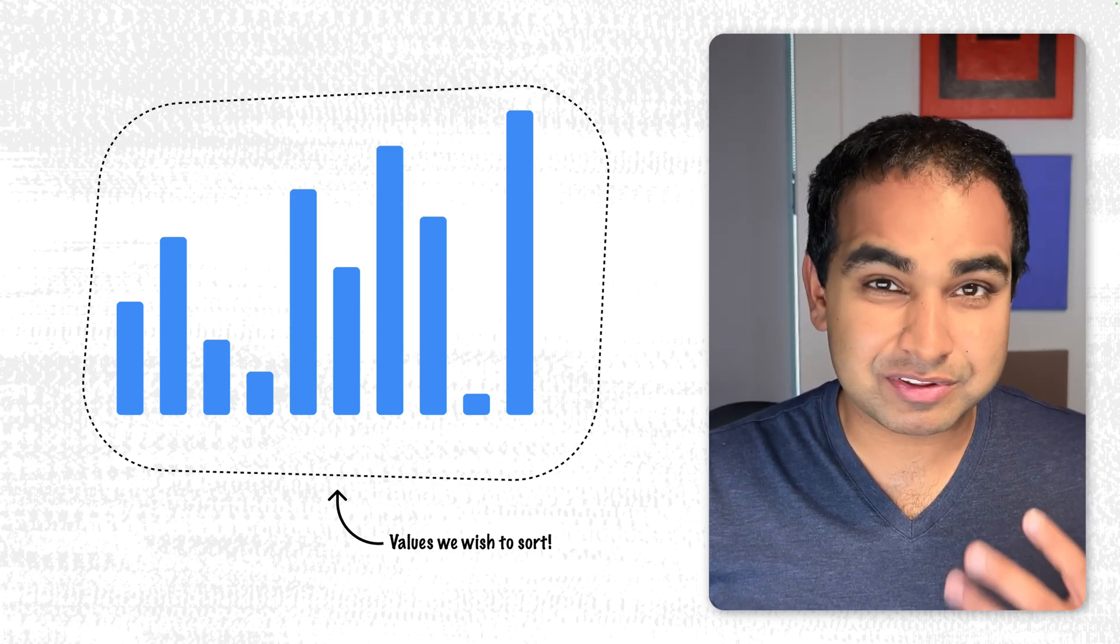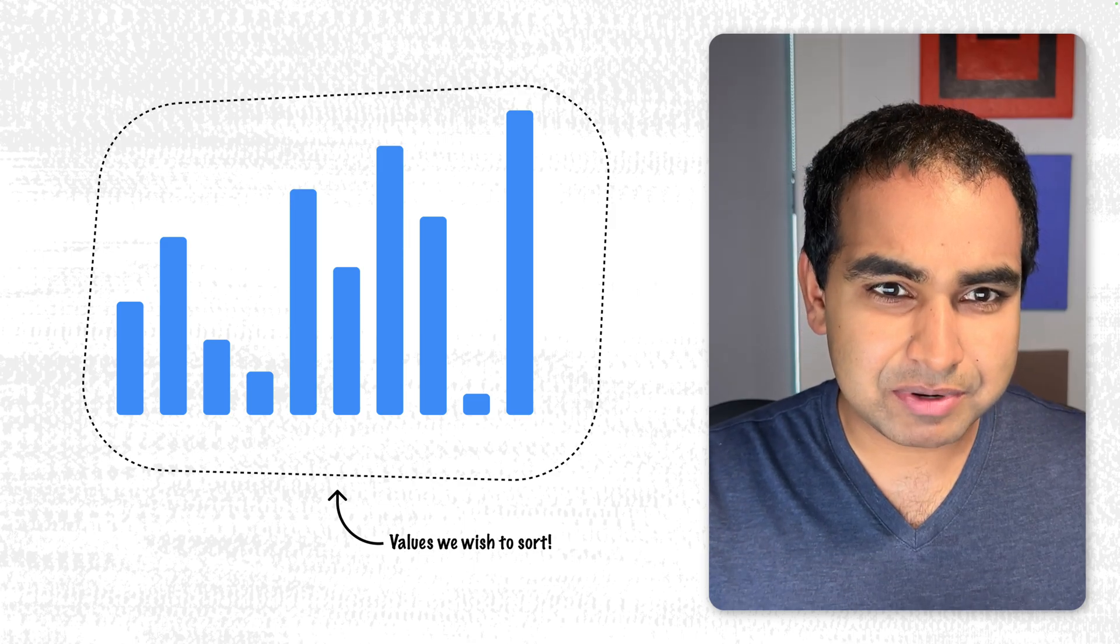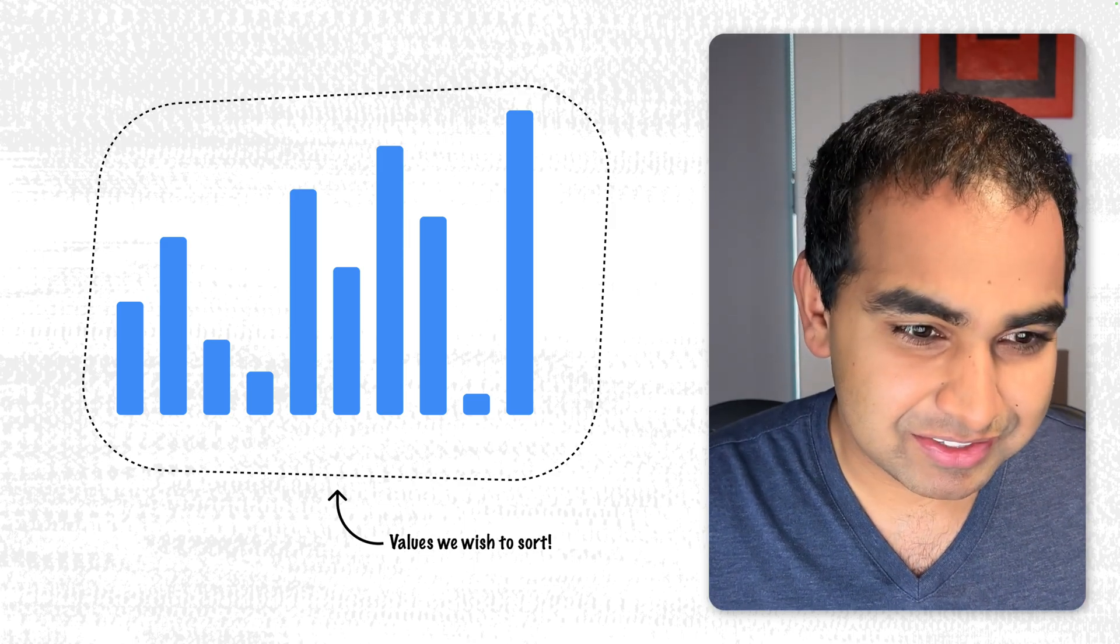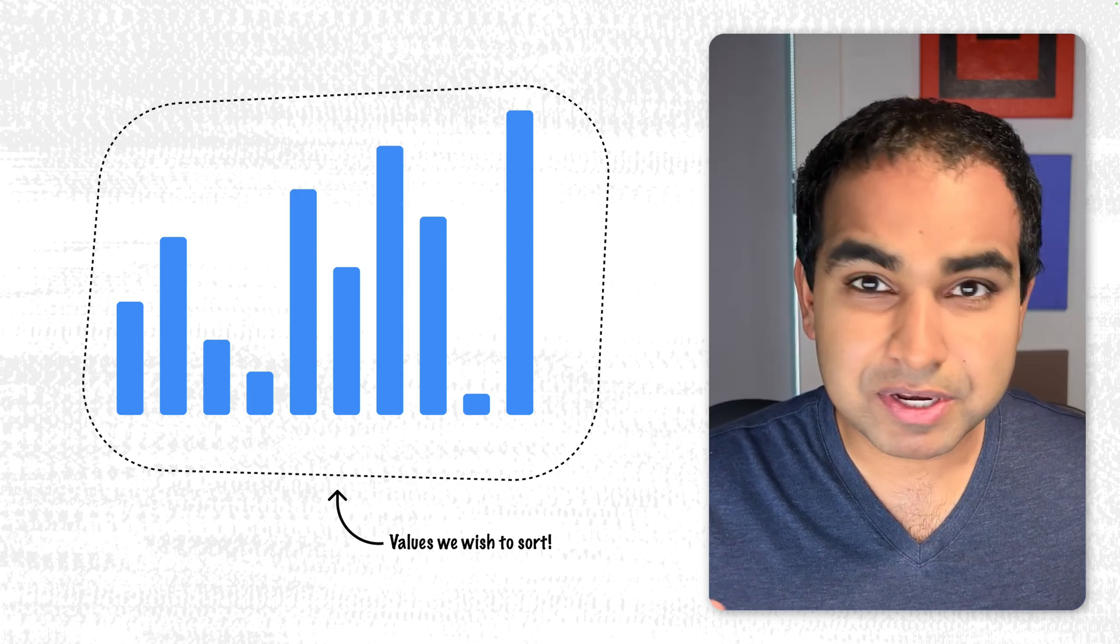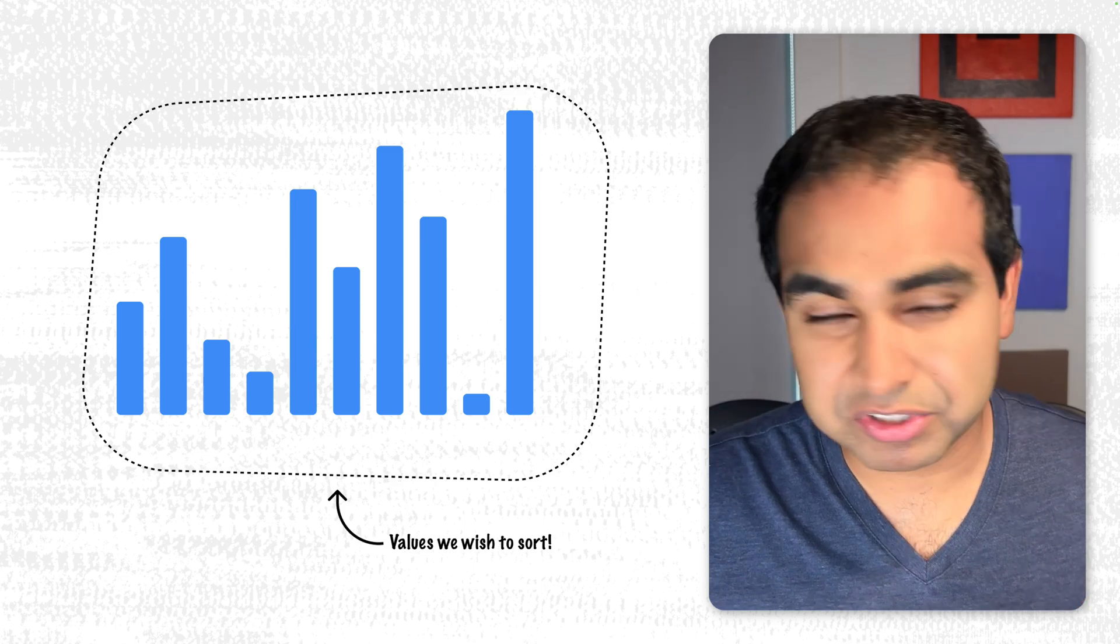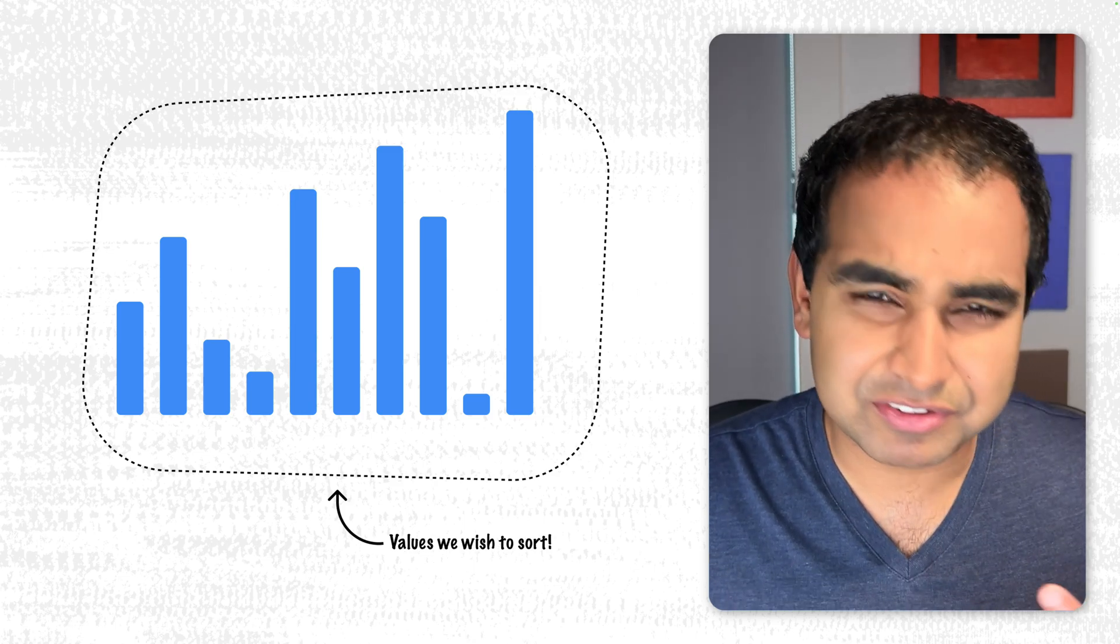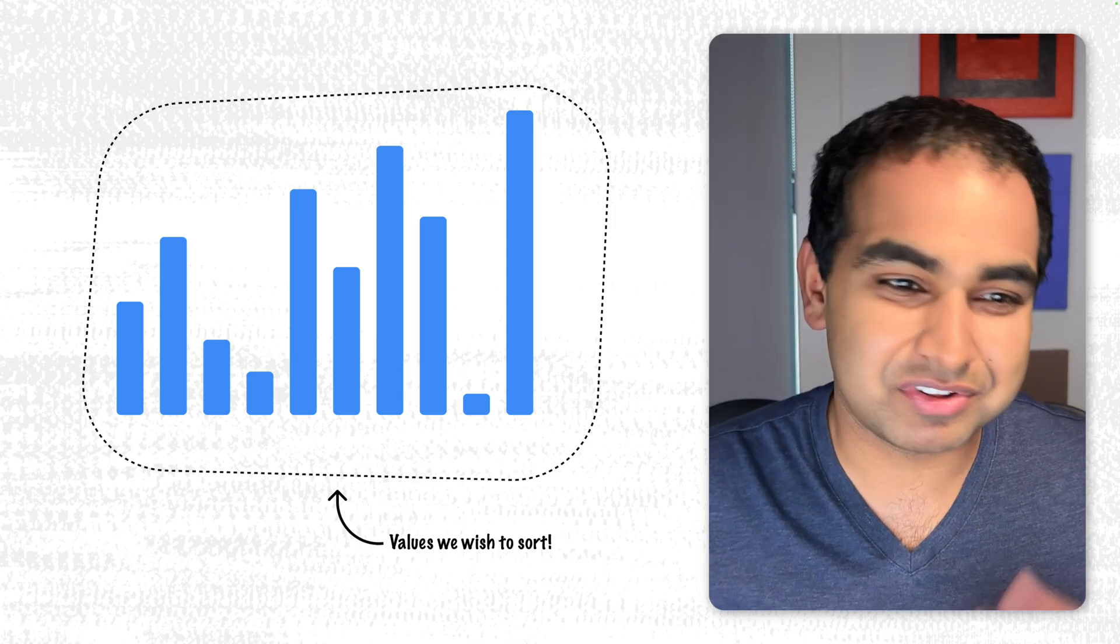We saw how we would use insertion sort to sort cards a few moments ago, but I want to take it in a more general direction. Let's say what we want to sort are these values that we see here. These values are going to be determined by the size of the bar. So the taller the bar, the larger the value. The smaller the bar, the smaller the value.